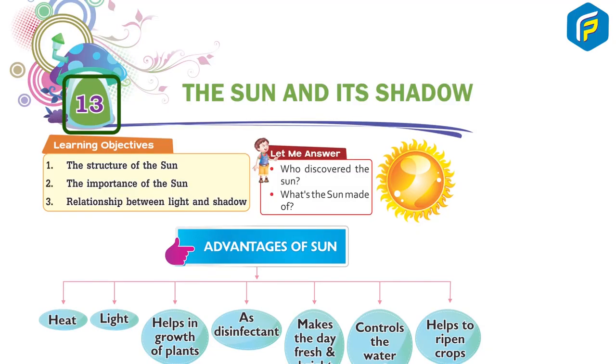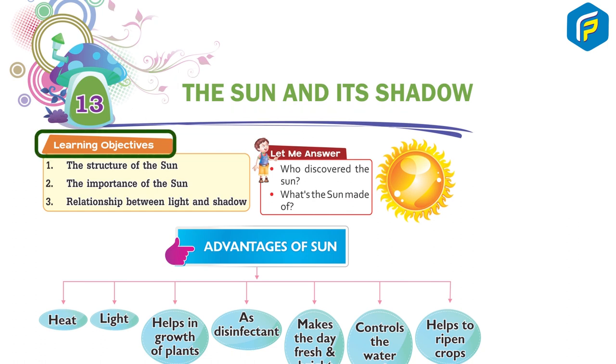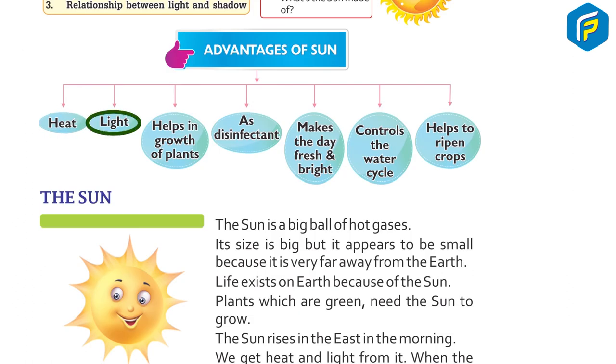Chapter 13: The Sun and Its Shadow. Learning objectives: 1. The structure of the Sun, 2. The importance of the Sun, 3. Relationship between light and shadow. Who discovered the Sun? What's the Sun made of? Advantages of the Sun: heat, light, helps in growth of plants, acts as disinfectant, makes the day fresh and bright, controls the water cycle, helps to ripen crops.